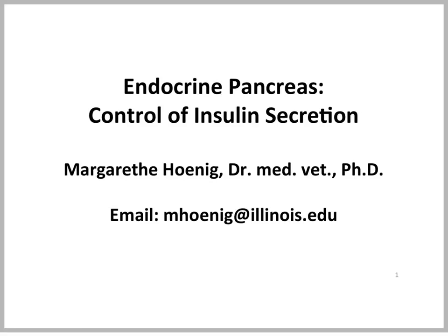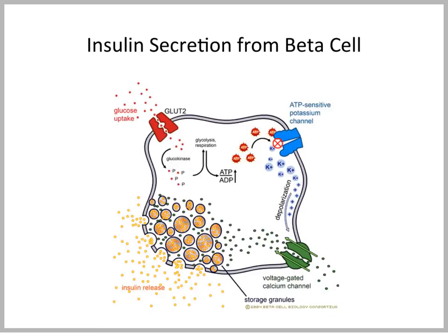This presentation is by Dr. Margaret Hoenig on the control of insulin secretion. Insulin secretion from the pancreatic beta cell proceeds the following way. When blood glucose increases after a meal, for instance, glucose is transported into the beta cell through the high-capacity glucose transporter called GLUT2.